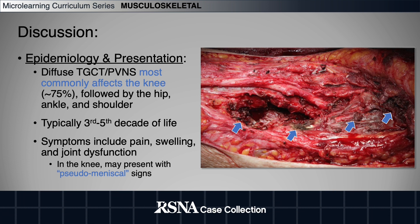Lesions typically present in the third to fifth decade of life, and history of traumatic injury is reported about half of the time. Clinically, patients may present with symptoms of pain, swelling, and joint dysfunction. In the knee specifically, so-called pseudomeniscal signs may also be present.